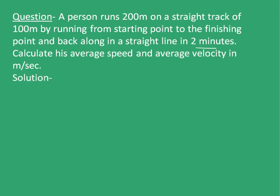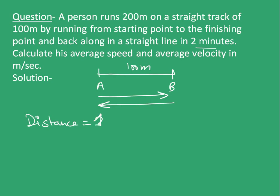Now let's take a question to understand the concept we learned. Suppose a person runs on a 200 meter track of 100 meters by running from starting point to the finishing point and back along in a straight line in 2 minutes. Calculate his average speed and average velocity in meters per second. We have been given that a person starting from point A to point B on a 100 meter track first goes from A to B, then comes back from B to A. In this process, the distance covered is equal to 100 meter plus 100 meter, so 200 meters. And the net displacement, that is the initial position minus the final position, is 0 meters.